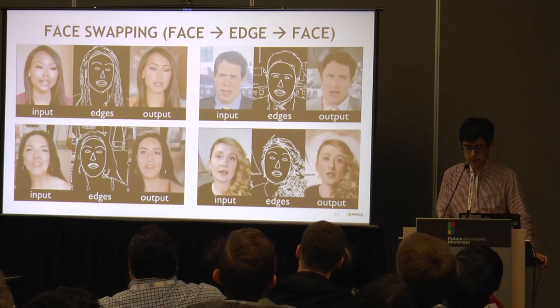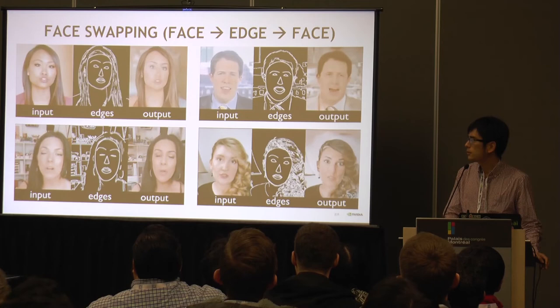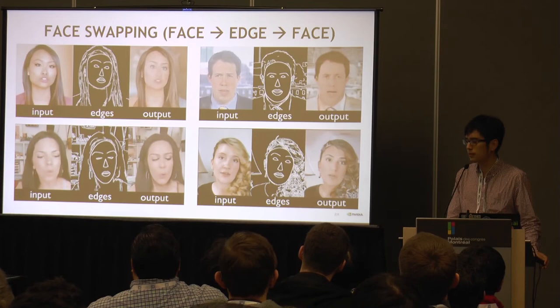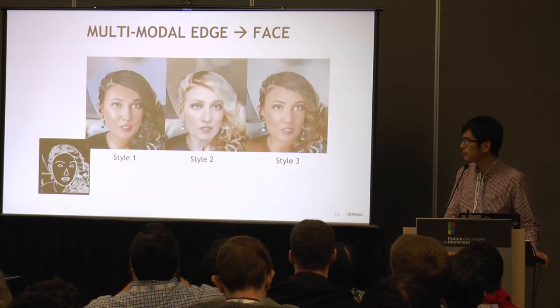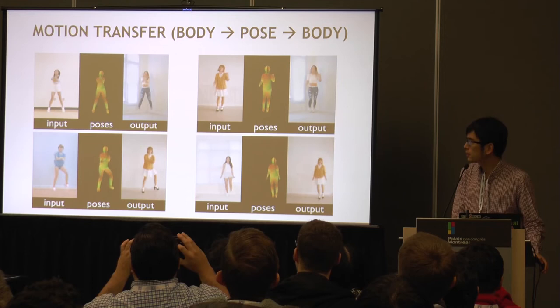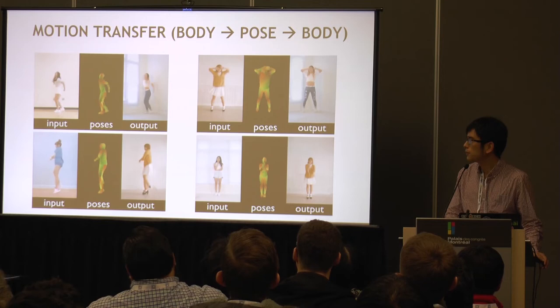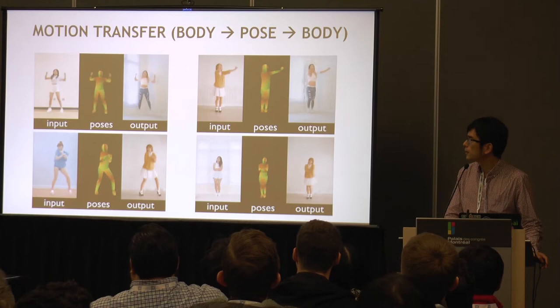Our network can also do other things. In this case, we can try to synthesize people talking using edge maps. Starting from some original sequence, we extract edge maps and then synthesize new videos based on these edge maps. Our network can also generate different people talking using the same input edge maps, and again the results look temporally smooth. Here's another example: we can synthesize videos of people dancing using pose information. Starting from some original sequence, we extract pose information and synthesize new videos. In this way, we can transfer the motion from one person to another person, and even the shadows are consistent with the subject.